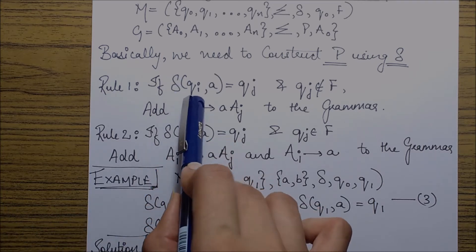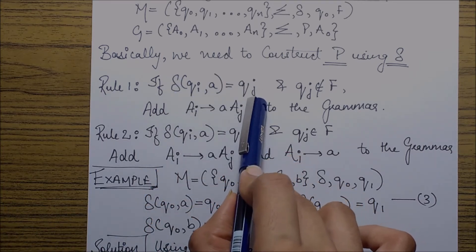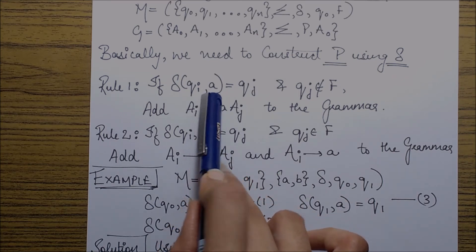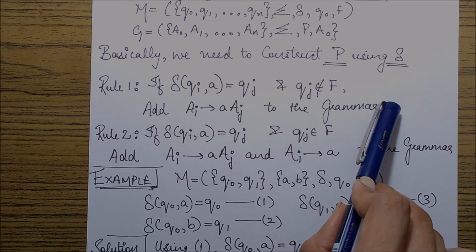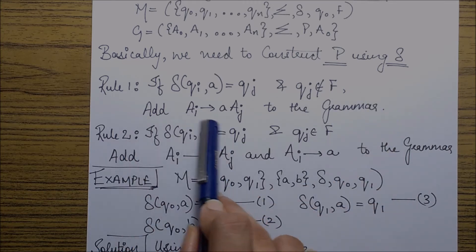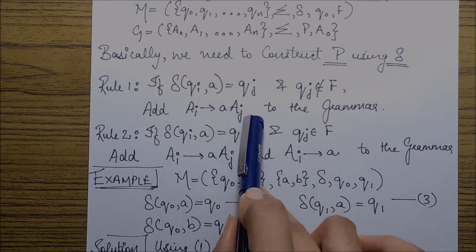From a state qi to qj with an input symbol a, and qj is not a final state, then we need to add a production saying Ai goes to aAj.